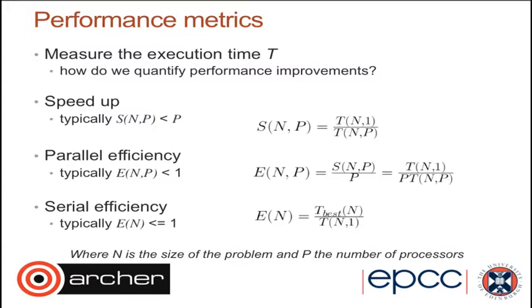One of the things that comes up a lot in parallel programming when looking at performance is the speed-up — how much faster your code is going. So if on one processor (P equals 1) your code takes one minute, you would hope that when you run it on two processors, you get perfect speed-up: it should take half the time, therefore be twice as fast, so the speed-up should be 2.